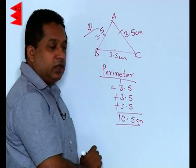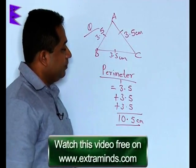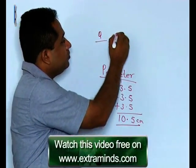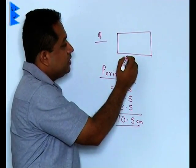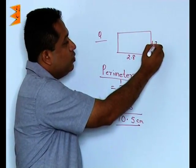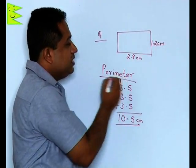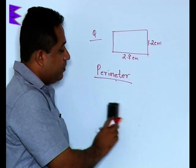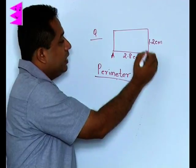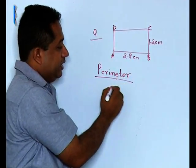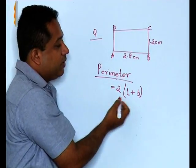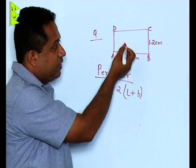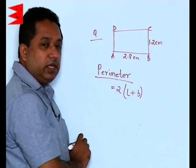Instead of a triangle, we could be given a rectangle. Let's say the length is 2.8 centimeters and the breadth is 1.2 centimeters, and the question is again to find the perimeter. The figure has changed from a triangle to a rectangle. The perimeter formula for a rectangle is 2 times the bracket of length plus breadth, which means we are adding all four sides of the rectangle.